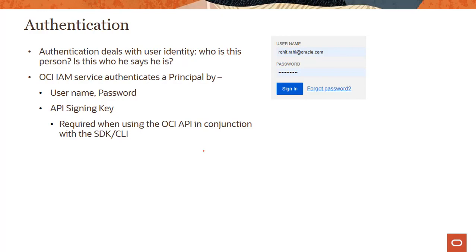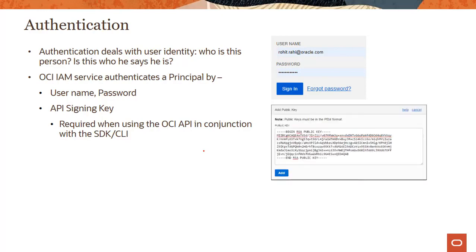The second authentication method is API signing keys, used when you use the OCI API in conjunction with the SDK and CLI. Your applications need to authenticate themselves against services. With API signing keys, you provide the public key and hold the private key yourself. When you make the request, you sign it with your private key — this is the public-private key encryption model, very common in the public cloud space.